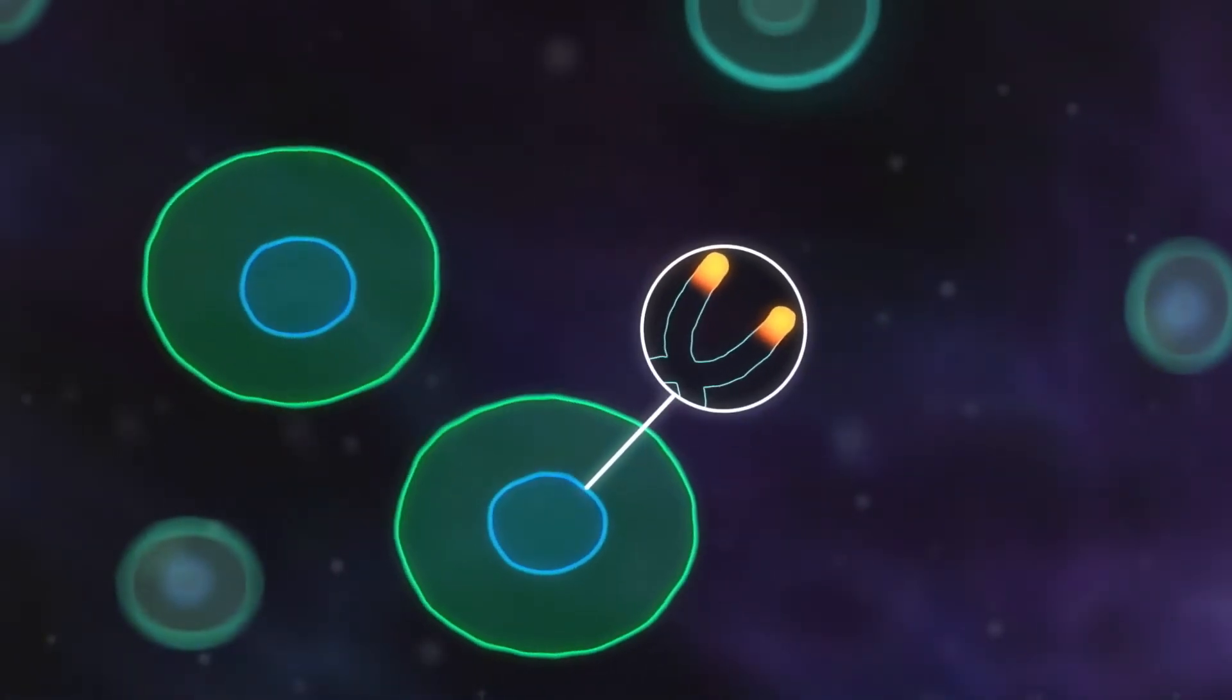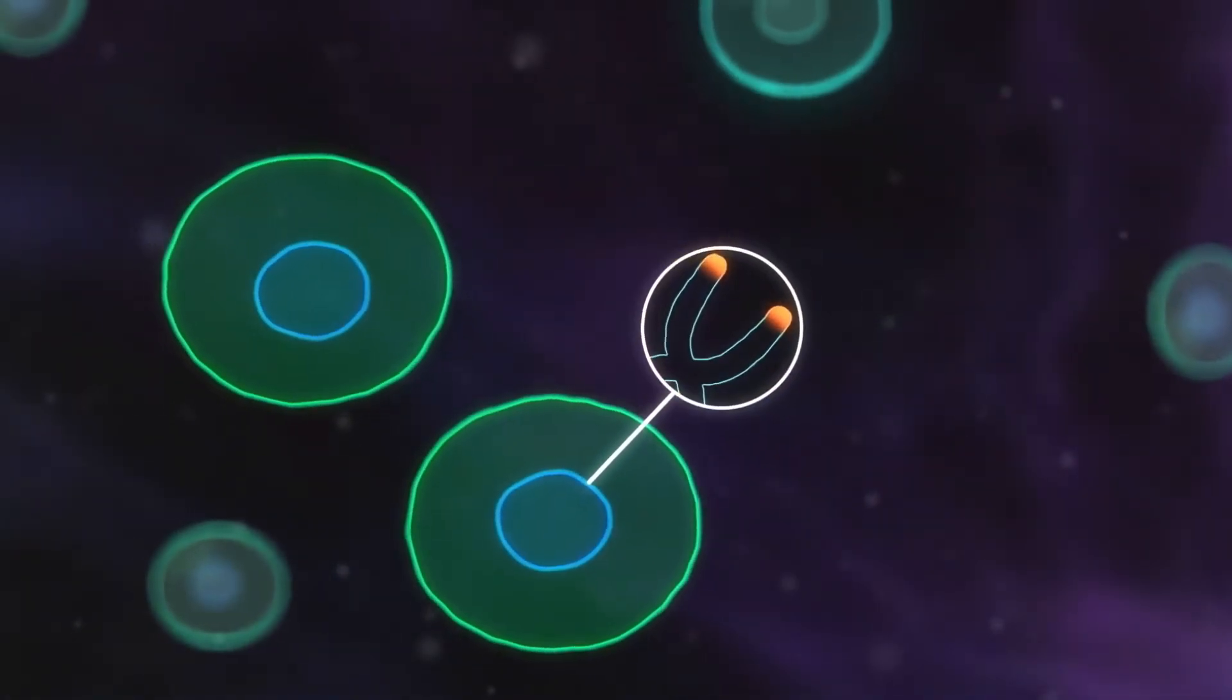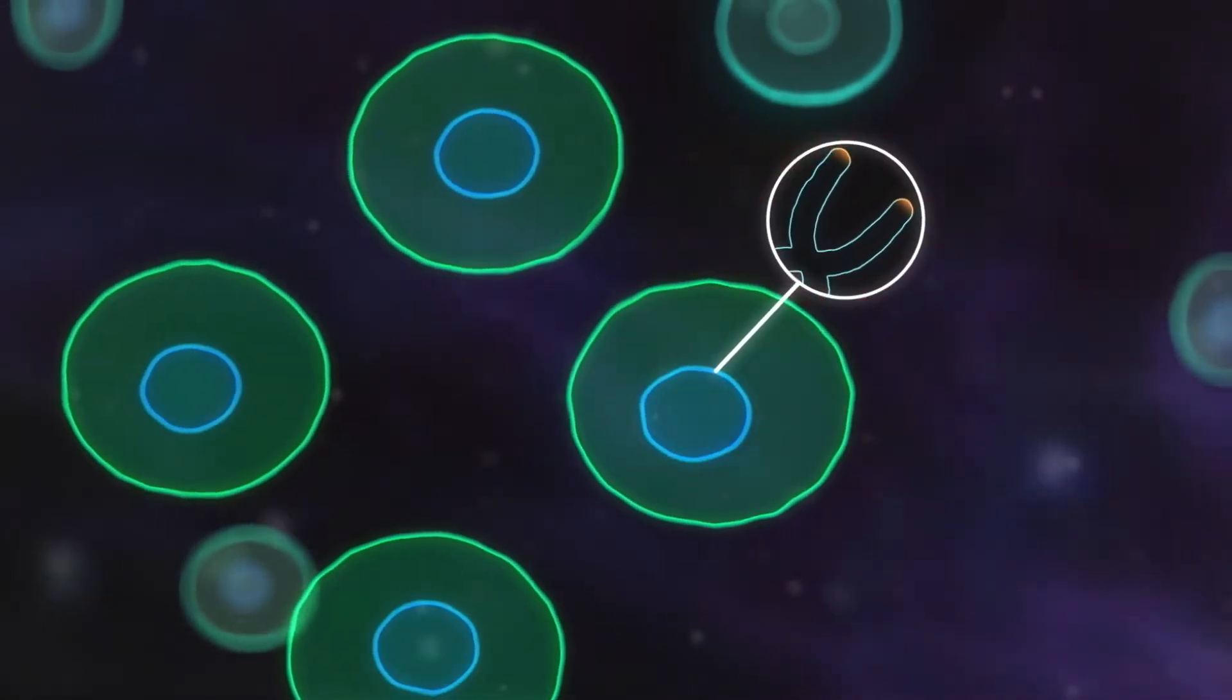Researchers believe that telomeres act as a built-in defense mechanism to prevent tumor growth. Each time a cell divides, its telomeres get shorter. And when they're too short, that's a signal to the cell that it's time to retire.